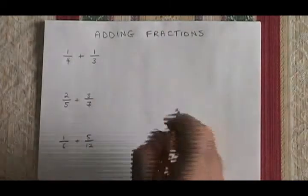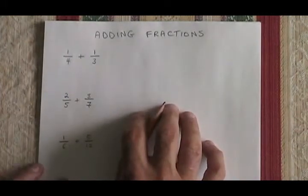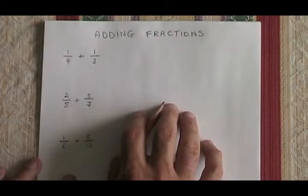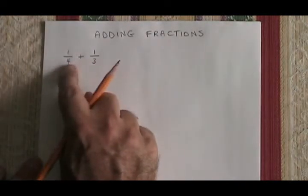Adding fractions requires a common denominator. We would prefer to use the lowest common denominator, and you can find that by listing the multiples of the two denominators you started with.